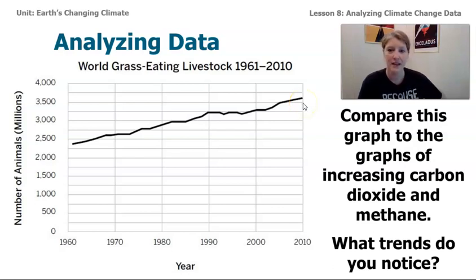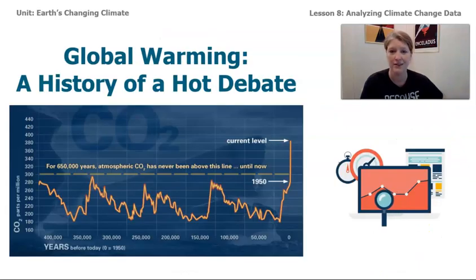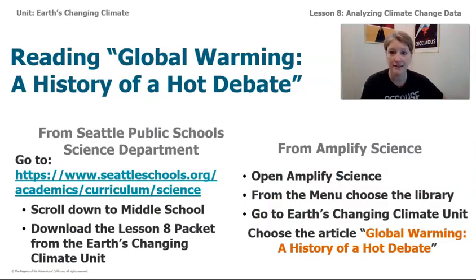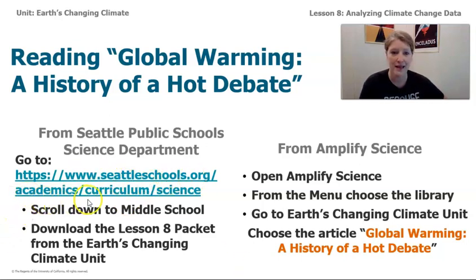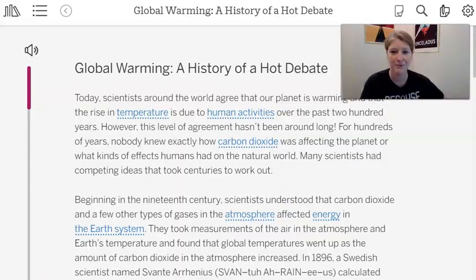So what does this all mean? Scientists have been looking at this data, and as we've discussed, there have been times where scientists don't always agree. We're going to be reading an article called 'Global Warming: A History of Hot Debate.' If you are a sixth grader in Seattle schools, go to your Amplify account, click Clever, open the library, go to Earth's Changing Climate Unit, and choose that article. If not, go to seattleschools.org/academics/curriculum/science, scroll to middle school, and download the Lesson 8 packet for Earth's Changing Climate Unit.